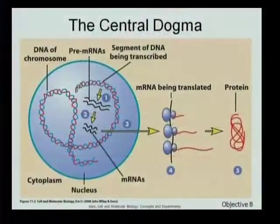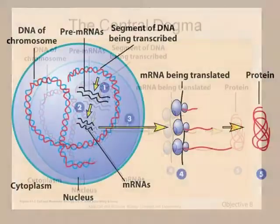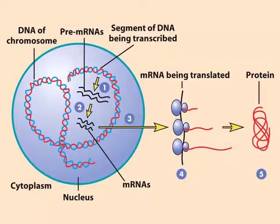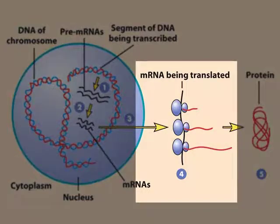We talked about the central dogma of molecular biology, and now we come back to it: DNA makes RNA, makes protein. This diagram is just another view of that central dogma, but now we're at step four. We've already gone through steps one, two, and three in some detail. Now we're at step four, where mRNA is being translated into protein.